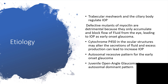For juvenile open-angle glaucoma, the inheritance pattern will be autosomal dominant. To clarify: when a child has just been born and glaucoma is diagnosed, the inheritance will be autosomal recessive. But juvenile open-angle glaucoma is going to have a history where somebody in the family had it at this age, because it follows an autosomal dominant pattern.